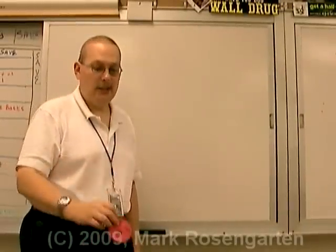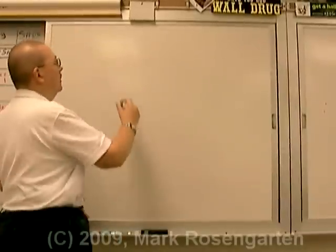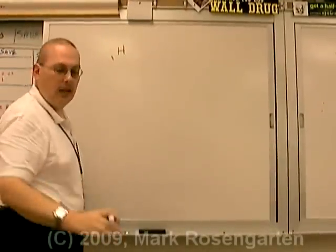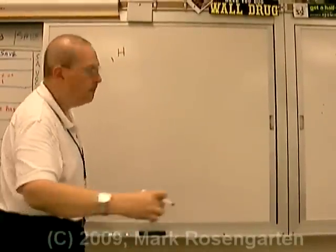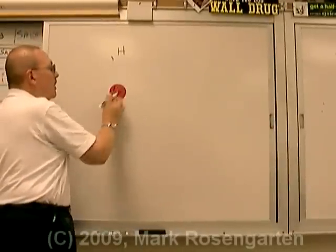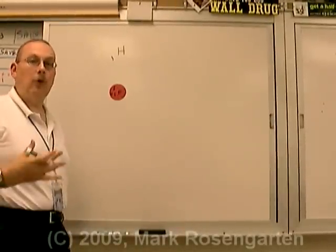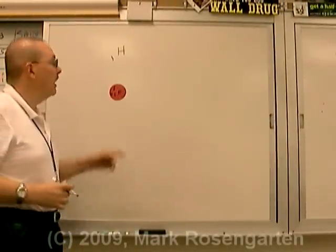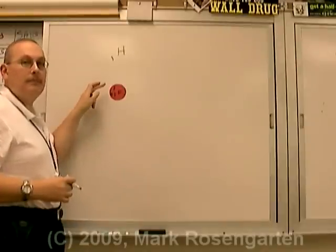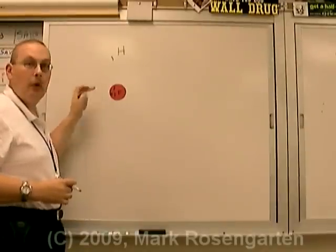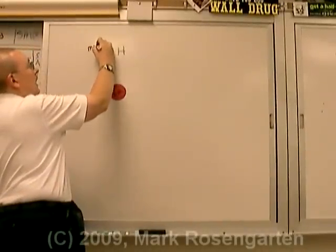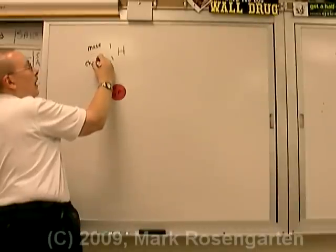An element is defined by the number of protons that an atom has in its nucleus. For example, the element hydrogen contains one proton in its nucleus. This particular form or isotope of hydrogen has a mass of one because it's made of only one proton. So the mass goes on top, the charge goes on the bottom.